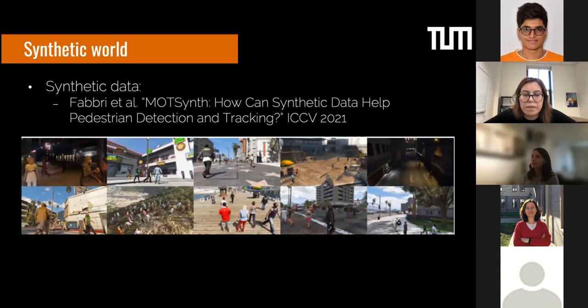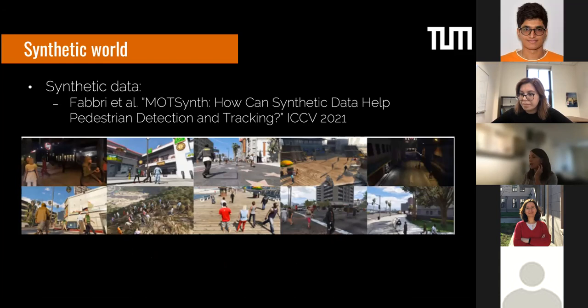One direction, presented at ICCV this year, is using synthetic data for tracking — specifically analyzing what happens when we create tracking scenarios with the GTA game engine. We benchmarked several methods of detection, re-identification, and tracking to see which works best with synthetic data and whether fine-tuning is needed. If you're interested, you can read the paper.